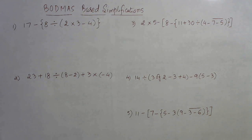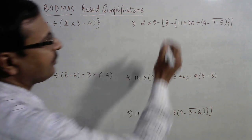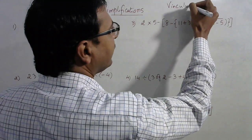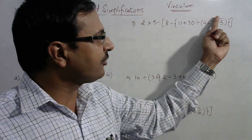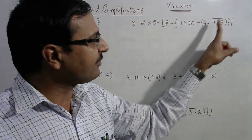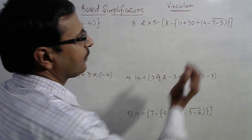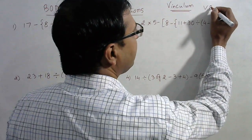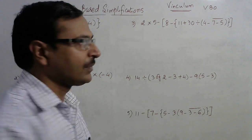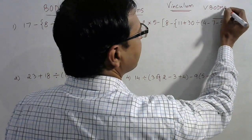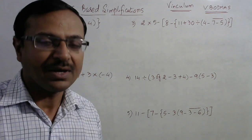Let me explain what BODMAS means and what the bar (vinculum) stands for. The vinculum is an operation — when a minus sign is outside the vinculum, we remove it first by simplifying the terms under the bar. So V stands for vinculum, followed by brackets (D), then O for 'OF' which means multiply, B for divide, M for multiply, A for addition, and S for subtraction. These are the operations and the sequence in which we apply them to get to our answer accurately and quickly.